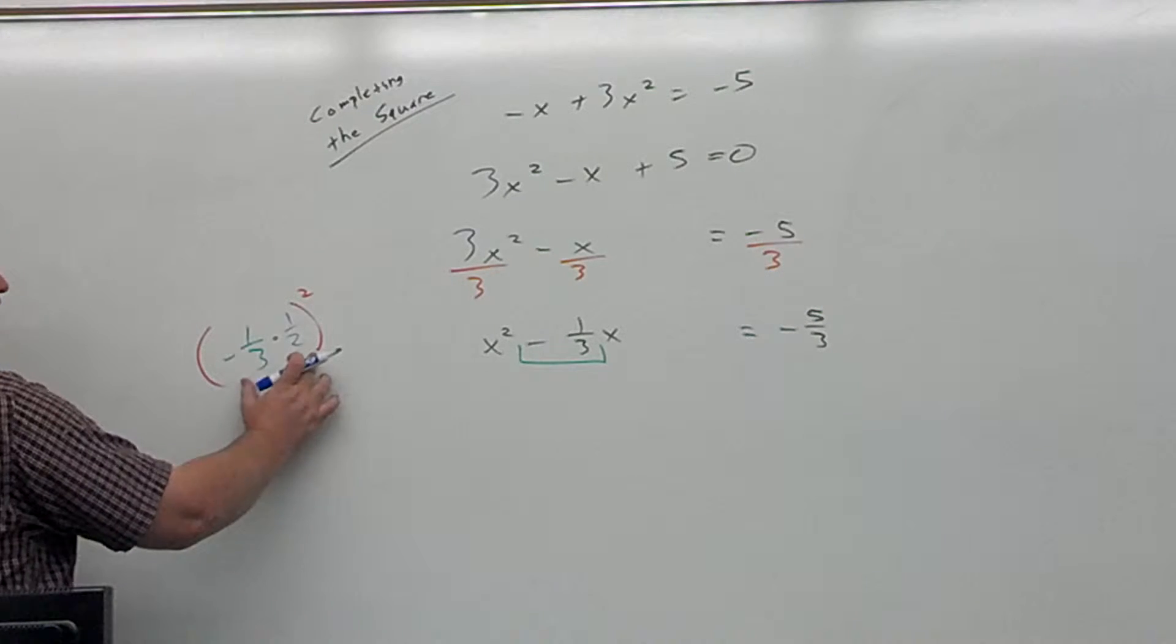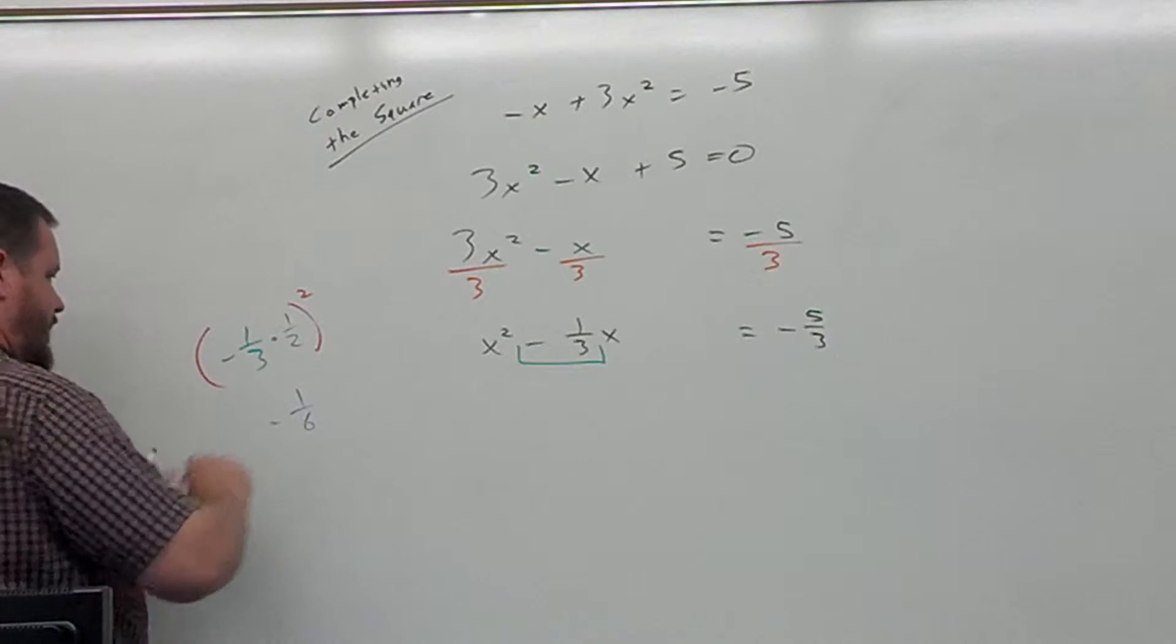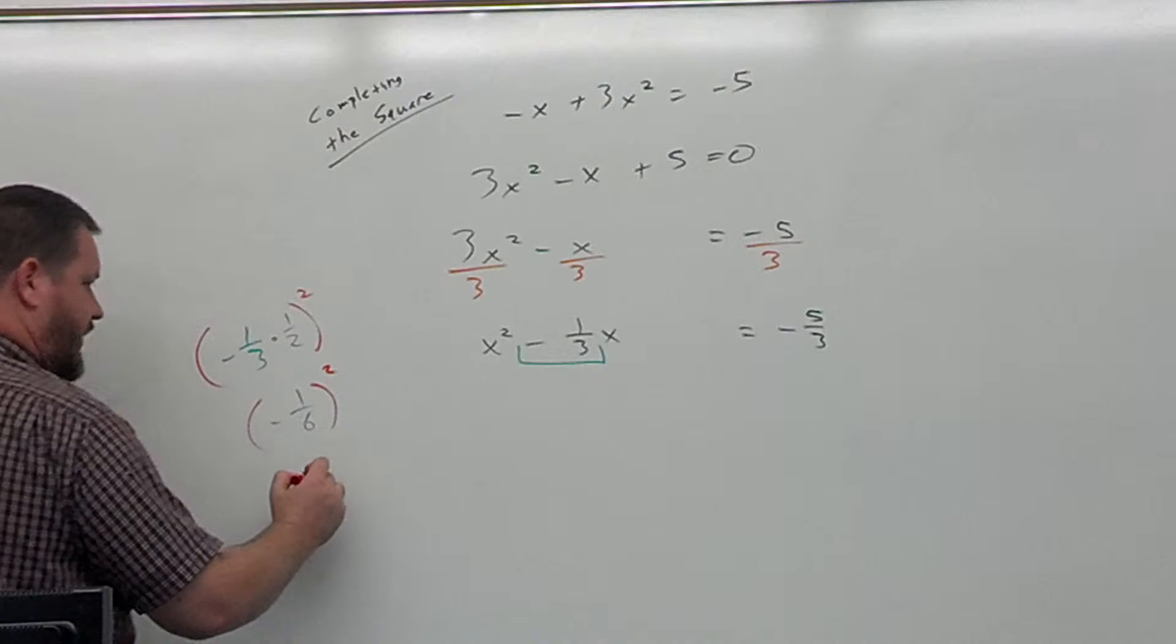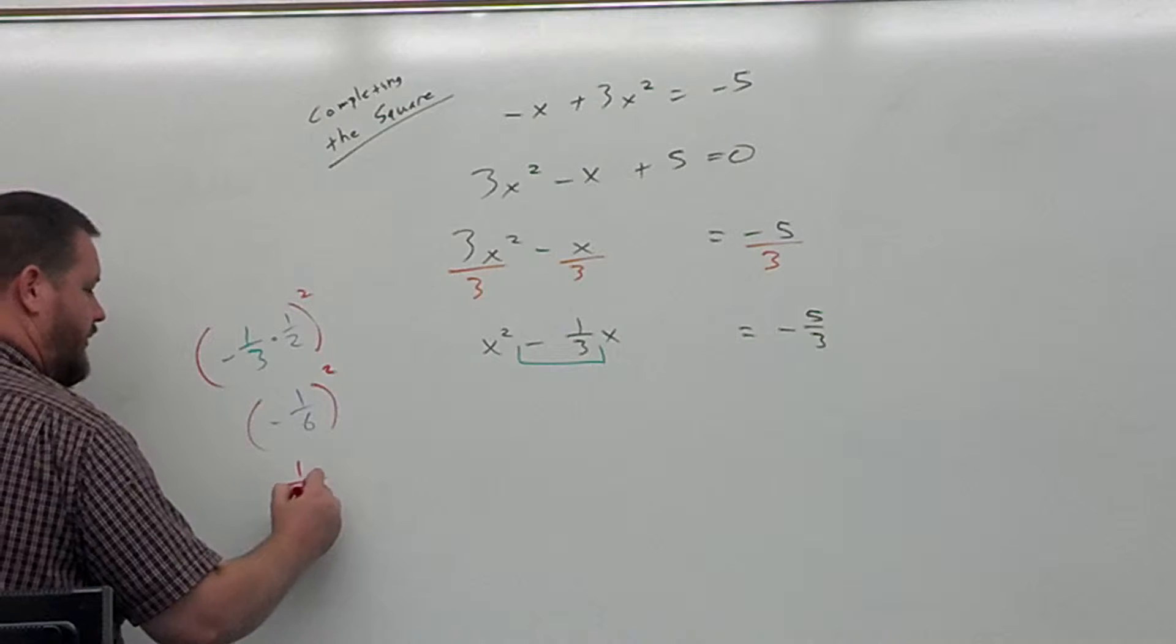and then I'm going to square that one. So what do I have inside the parentheses? Negative 1 sixth, and after I square that, what's that going to be? It's going to be positive 1 over 36.